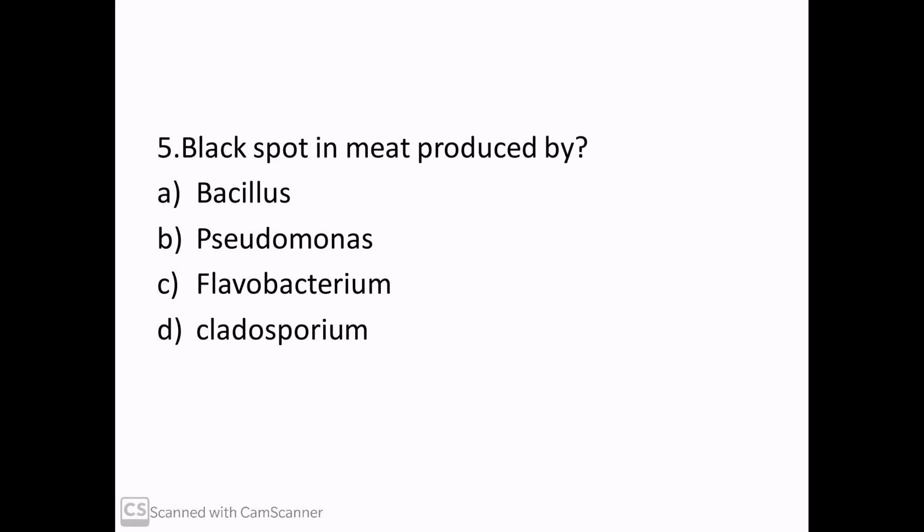Black spot in meat is produced by: Bacillus, Pseudomonas, Flavobacterium, or Cladosporium. Correct answer: Option D, Cladosporium.